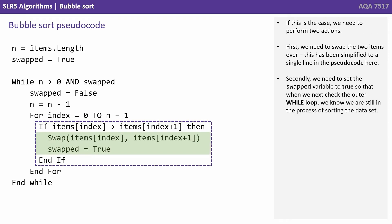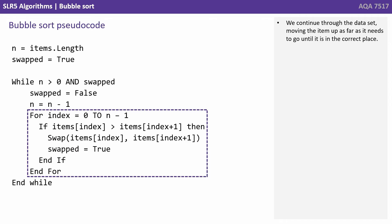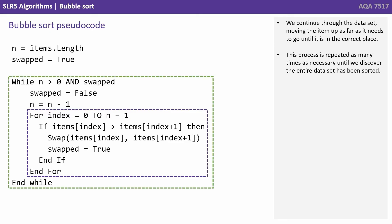If this is the case, we need to perform two actions. First, we need to swap the two items over — this has been simplified to a single line in the pseudocode. And secondly, we need to set the swapped variable to true, so when we next check the outer while loop, we know we're still in the process of sorting the data set. We continue through the data set, moving the item up as far as it needs to go until it's in the correct place. This process is repeated as many times as necessary until the entire data set has been sorted.